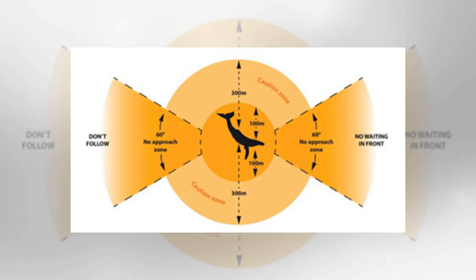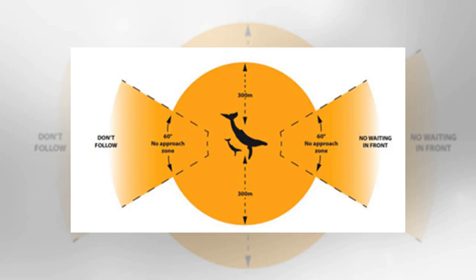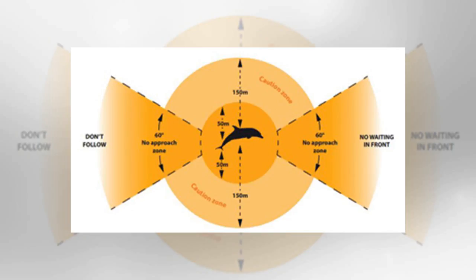When a southern right whale swam up the River Derwent recently, people jumped in their boats, paddle boards and kayaks to get a closer look. Some admitted they got closer than whale watching guidelines recommend but thought no harm had been done.